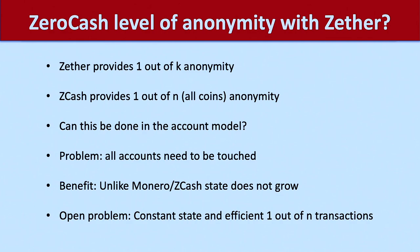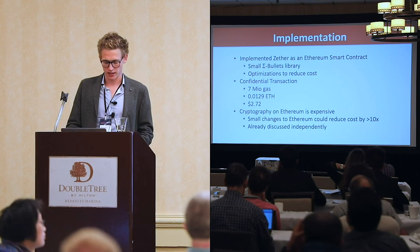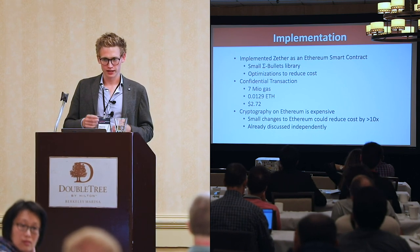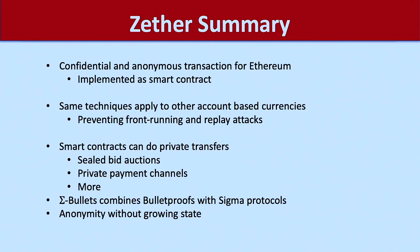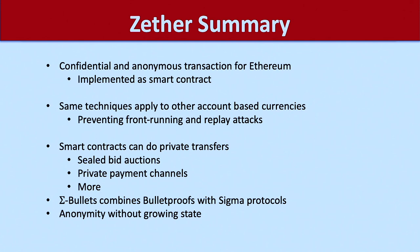It turns out you can't get Zcash-level anonymity. We implemented this as an Ethereum smart contract and are able to fit it within the block size limit. Transaction costs are on the order of a dollar — though these numbers constantly change. Implementing cryptography on Ethereum is obviously quite expensive, but small changes to Ethereum could drastically reduce the cost. In summary, we have confidential and anonymous transactions for Ethereum applicable to general account-based models — seven out of the top ten cryptocurrencies use this model. We also developed Sigma Bullets, an adaptation to bulletproofs with many interesting applications. Thank you very much.